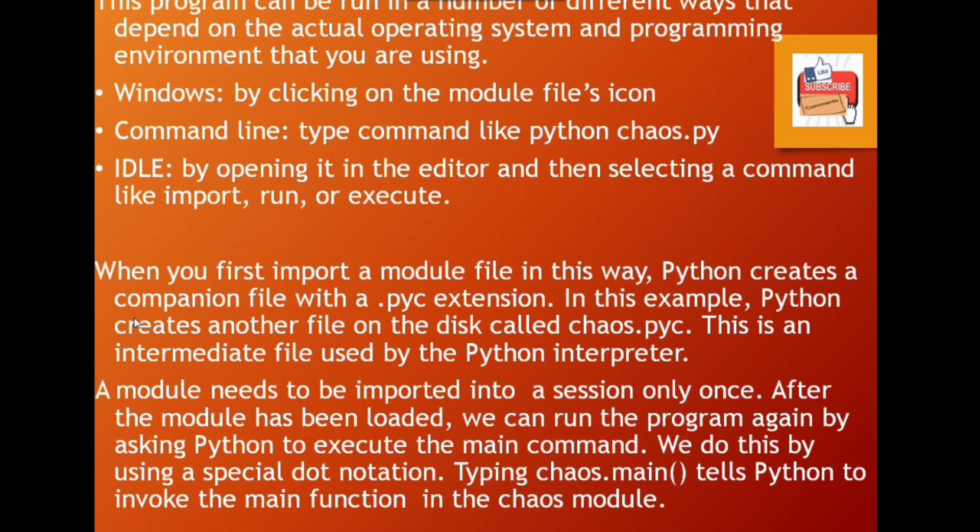When you first import a module file in this way, Python creates a companion file with a .pyc extension. In this example, Python creates another file on the disk called chaos.pyc. This is an intermediate file used by the Python interpreter. A module needs to be imported into a session only once. After the module has been loaded, we can run the program again by asking Python to execute the main command.